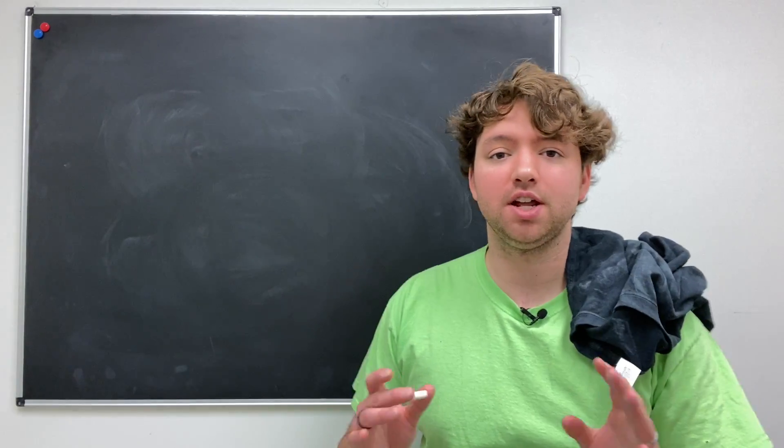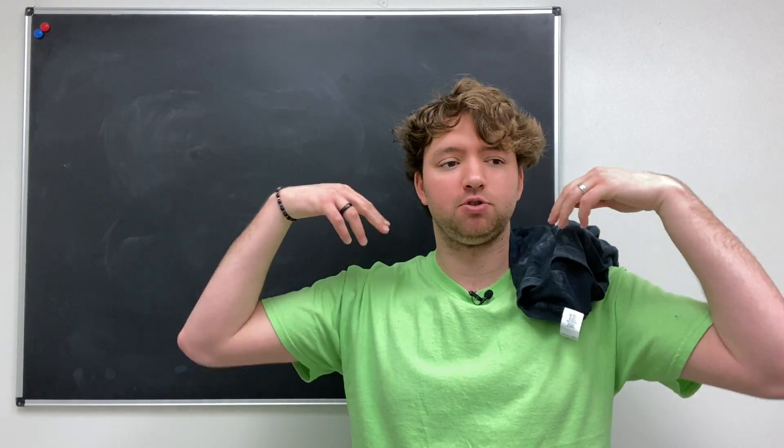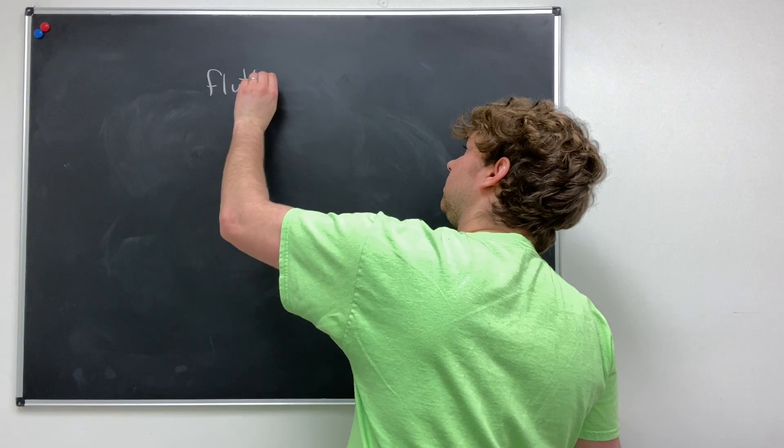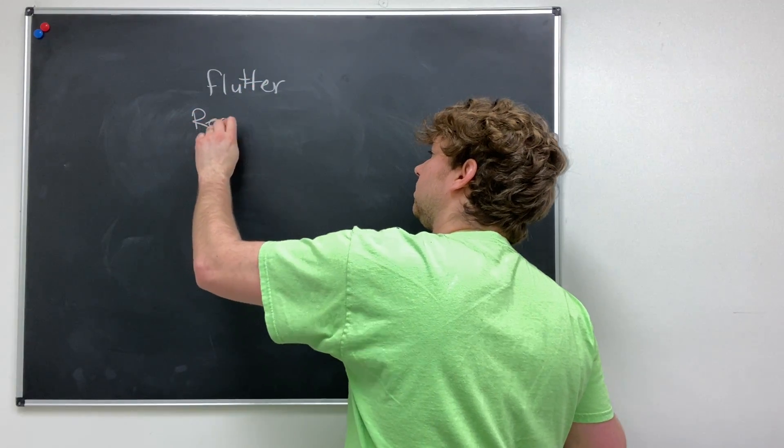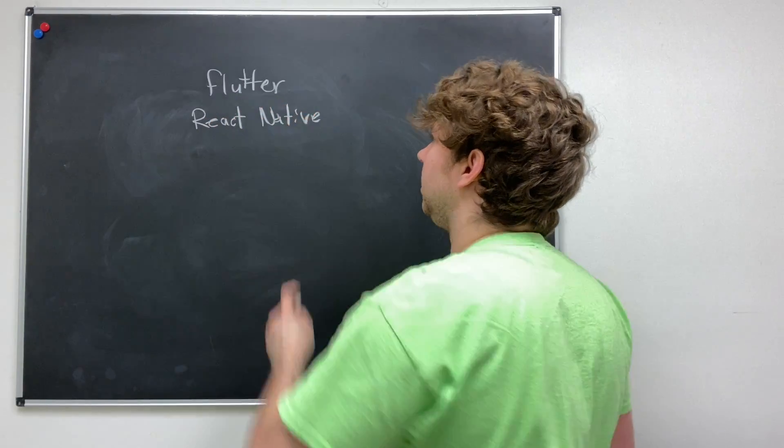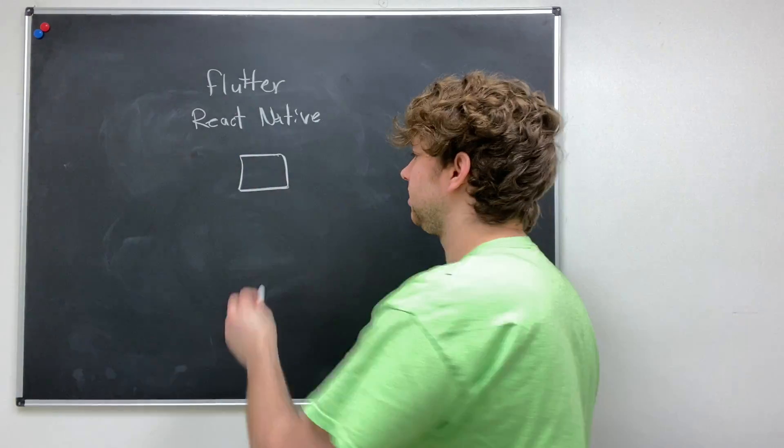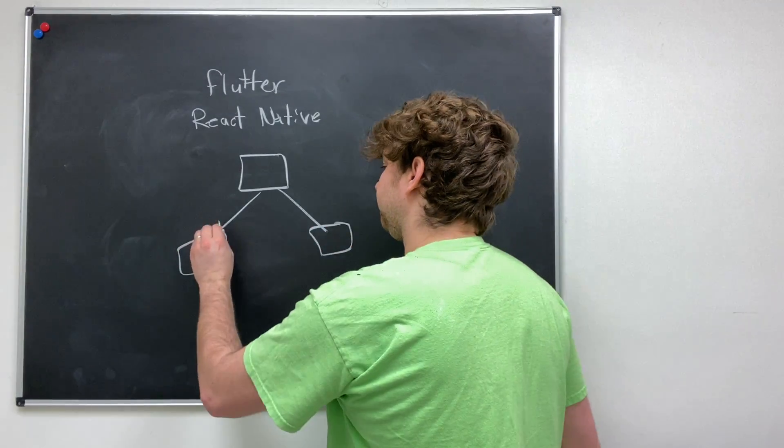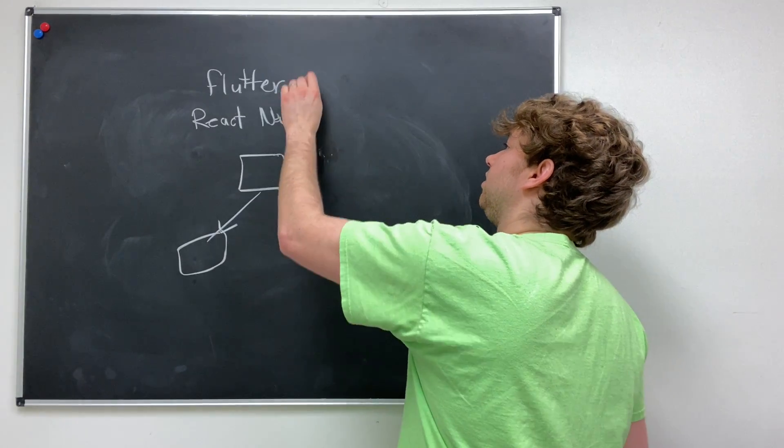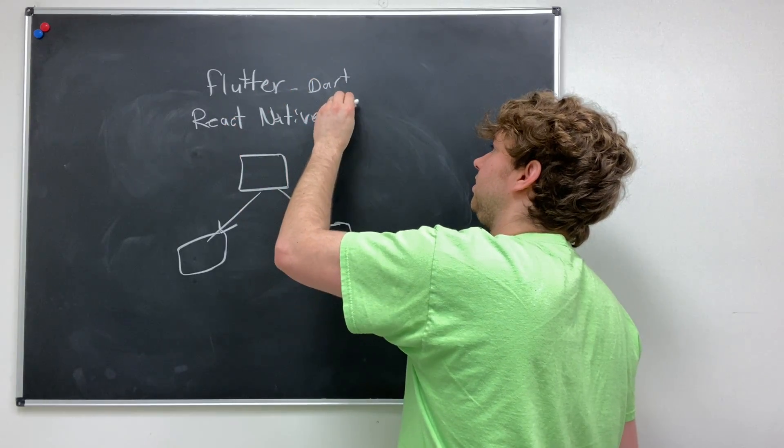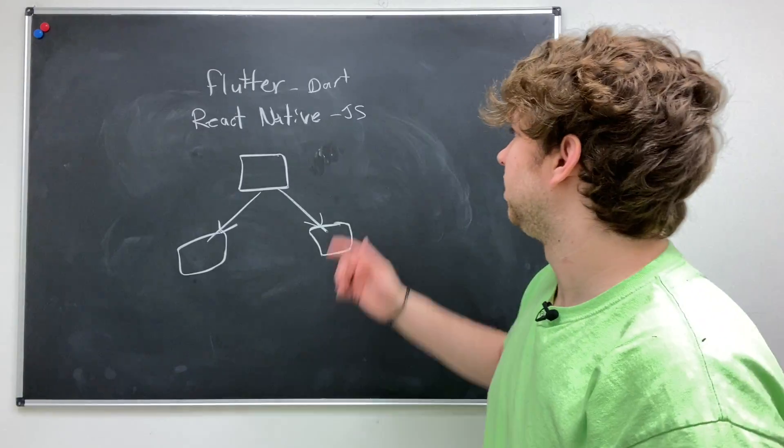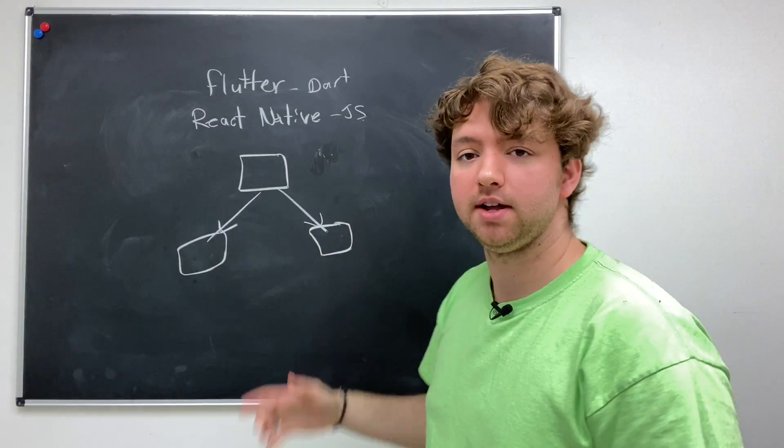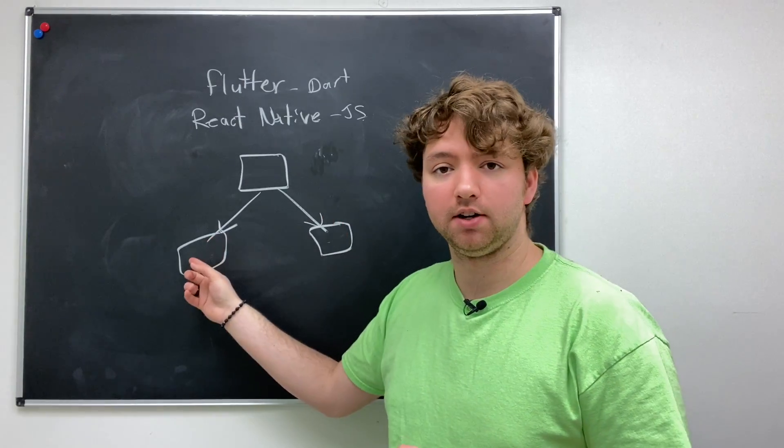Another option is to use a tool that allows you to develop one code base that will then transpile to be native apps. So for example, an option is Flutter. Another option is React Native. And what these will do, this will allow you to code one thing and then this gets deployed to iOS and Android. So in the example of Flutter, you can use the Dart programming language. In the example of React Native, you can use JavaScript using React. So if you want to develop your application in JavaScript and then just have it magically work on Android and magically work on iOS without having to know Swift or Java, that is how you can do that.